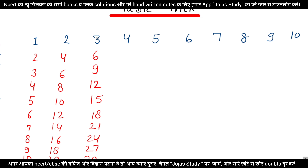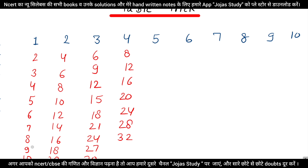The 4 table will be written: 1, 2, 3, 4, 5, 6, 7, 8, 9, 10, 11, 12, 13, 14, 15, 16, 17, 18, 19, 20, 21, 22, 23, 24, 25, 26, 27, 28, 29, 30, 31, 32, 33, 34, 35, 36, 37, 38, 39, 40. So this is our 4 table.